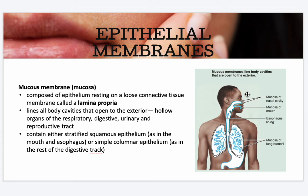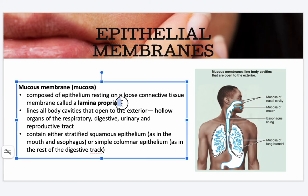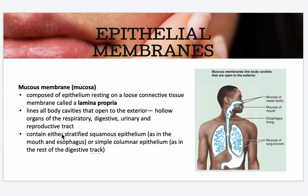Your mucous membranes line all body cavities that open to the exterior — the hollow organs of the respiratory, digestive, urinary, and reproductive tract. They are composed of an epithelium resting on a loose connective tissue called the lamina propria. They contain either stratified squamous epithelium, as in the mouth and esophagus, or simple columnar epithelium in the rest of your digestive tract.